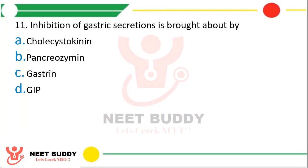Question number 11. Inhibition of gastric secretion is brought about by: option A. Cholecystokinin, option B. Pancreozymin, option C. Gastrin, or option D. GIP. The correct answer is option D, GIP.